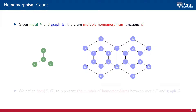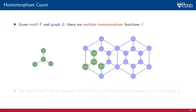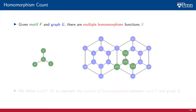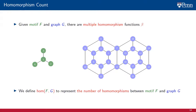As we have already emphasized, a motif F can be embedded into a graph G in multiple ways, meaning there are multiple homomorphisms from a motif F to a graph G. For the star graph, this is a possible homomorphism function, this is a second, this is a third, and this is a fourth — there are many more. The count of all homomorphism functions is the quantity hom(F, G): the total number of ways in which we can embed the motif into the graph.